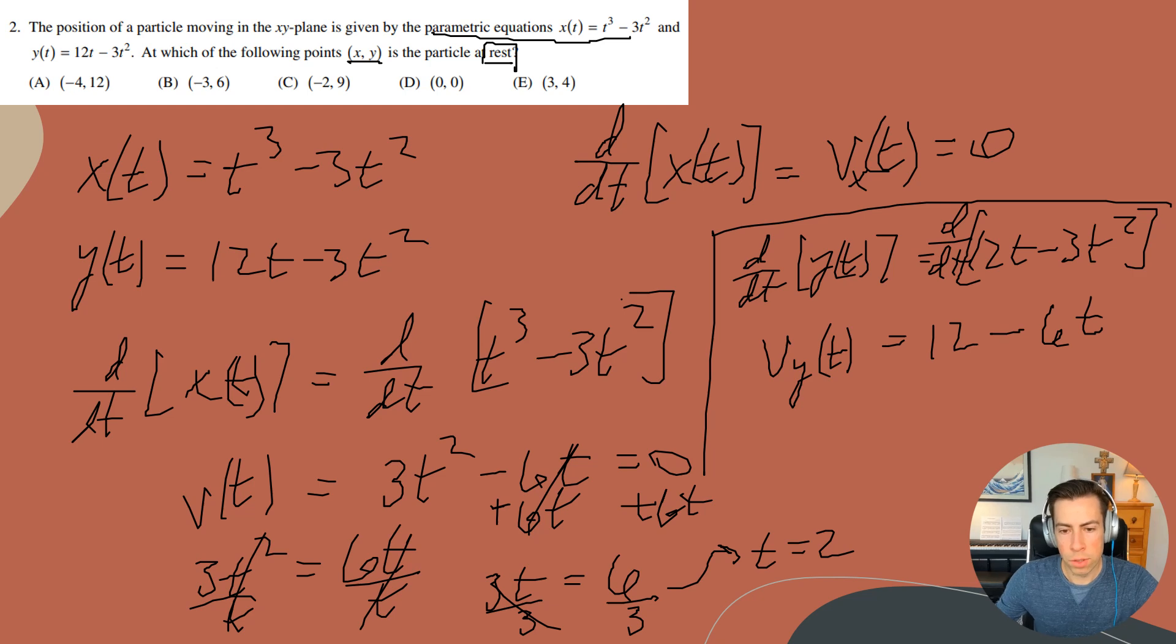I want to set this to zero again. So I'm going to have 12 equals 6t. I'll then divide both sides by 6, and I will get that t equals 2. So whenever t equals 2, that is when the particle is at rest. It is not moving in the y or the x direction. Its velocity is zero.